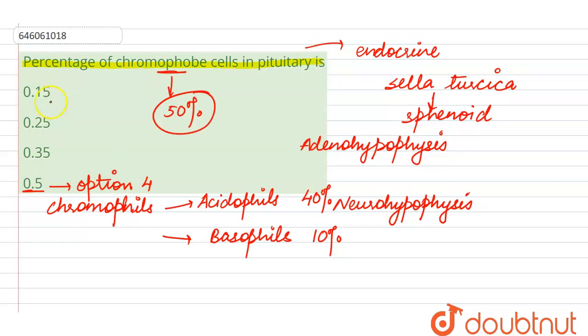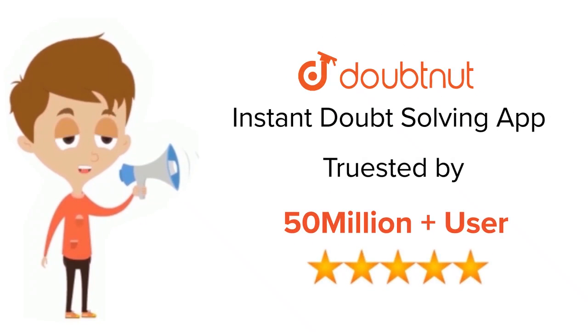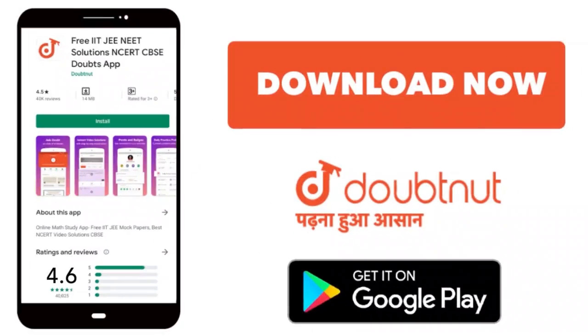Whereas the other options which are given here may be marked as wrong ones. So this is all about this query. Option four is the right answer. Thank you. For class 6 to 12, IIT-JEE, and NEET level, trusted by more than 5 crore students, download Doubtnut app today.